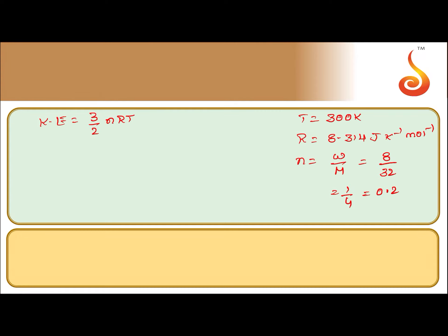So that is equal to 3 by 2 into number of moles we calculated, 0.25, into 8.314 into 300. So if I calculate this, 3 into 0.25 into 8.314 into 300, how much will I get?